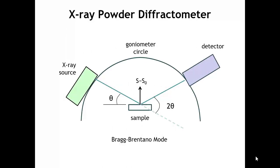To begin with, let's look at a very simple picture of how an x-ray powder diffractometer would work. You can run a powder diffractometer in one of two modes, either in a transmission mode or in a reflection mode. The reflection mode is called the Bragg-Brentano mode, and we're going to use that for illustrative purposes in this lecture.